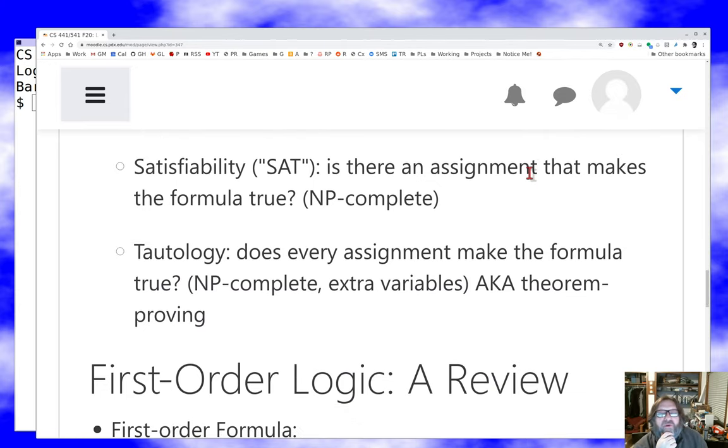Satisfiability: is there an assignment that makes the formula true? We've talked some about that already and about how you might decide whether there's an assignment that makes the formula true. That's an NP complete problem. And then there's the tautology problem, which is: does every assignment make the formula true? It turns out you can solve that as an NP complete problem as well with some extra variables. This is sort of the theorem proving problem. You're trying to decide whether something's a tautology. For propositional formula, all this stuff is straightforward and that's great.